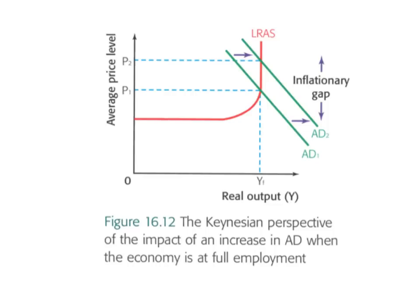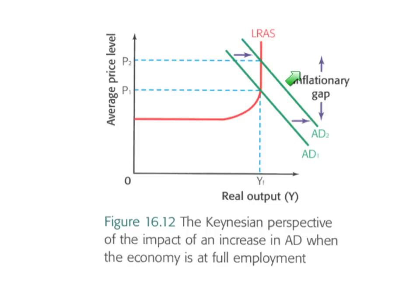It is impossible for the economy to produce any further increase in output in the long run given the existing factors of production. In the Keynesian model, there is not the possibility that output could move beyond its real maximum. An increase in aggregate demand from AD1 to AD2 results in no change in output, as the economy cannot produce output beyond the full employment level. The only impact is an increase in the price level from P1 to P2. Therefore, we say that there is an inflationary gap, whereby the level of aggregate demand cannot be satisfied given the existing resources, and the price level rises to allocate scarce resources among the competing components of aggregate demand — consumers, producers, government, and the foreign sector.